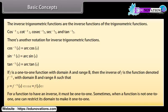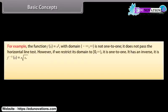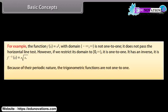For a function to have an inverse, it must be one-to-one. Sometimes when a function is not one-to-one, one can restrict its domain to make it one-to-one. For example, f(x) = x² with domain (−∞, ∞) is not one-to-one — it does not pass the horizontal line test. However, if we restrict its domain to [0, ∞), it is one-to-one and has an inverse: f⁻¹(x) = √x. Because of their periodic nature, the trigonometric functions are not one-to-one.